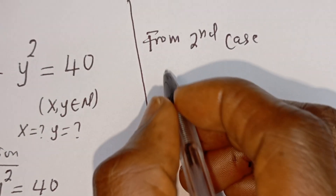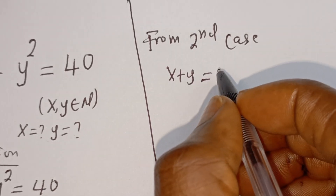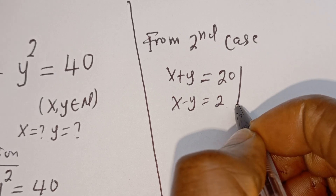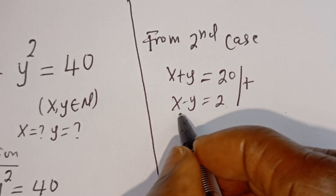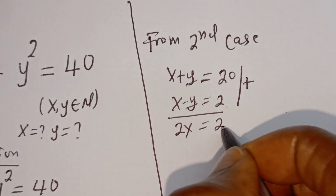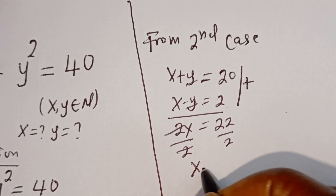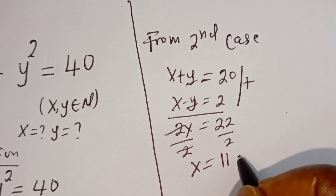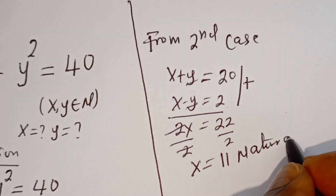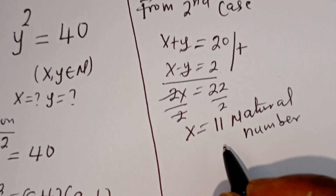For the second case: x plus y equals 20, and x minus y equals 2. This is a simultaneous equation. Using the elimination method by adding the two equations, the y terms cancel. We get 2x equals 22. Dividing both sides by 2, x equals 11. This is a natural number, so it is accepted.